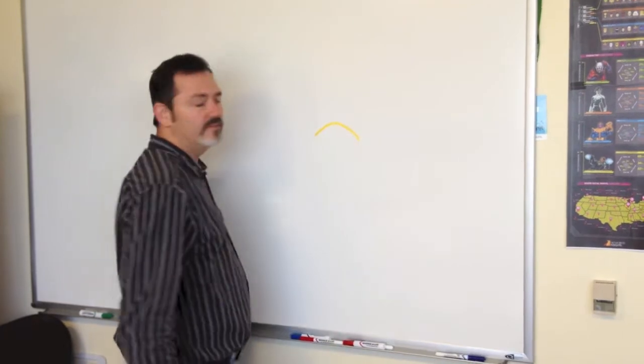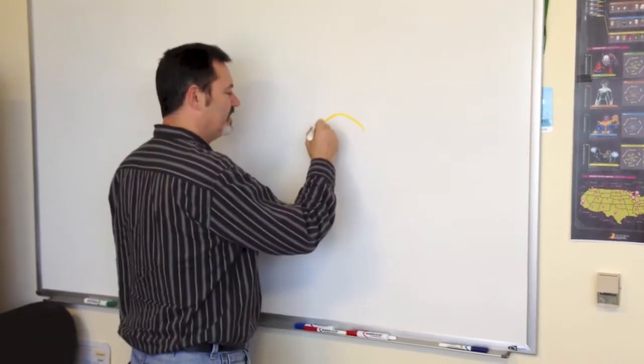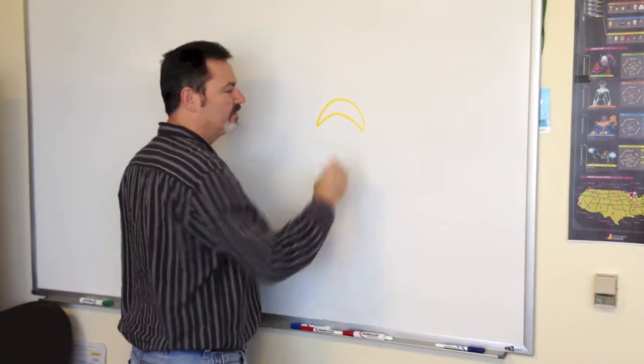I'm going to start off, we're going to do a little half circle in yellow. Now I'm going to take that and turn this into a little crescent mint.